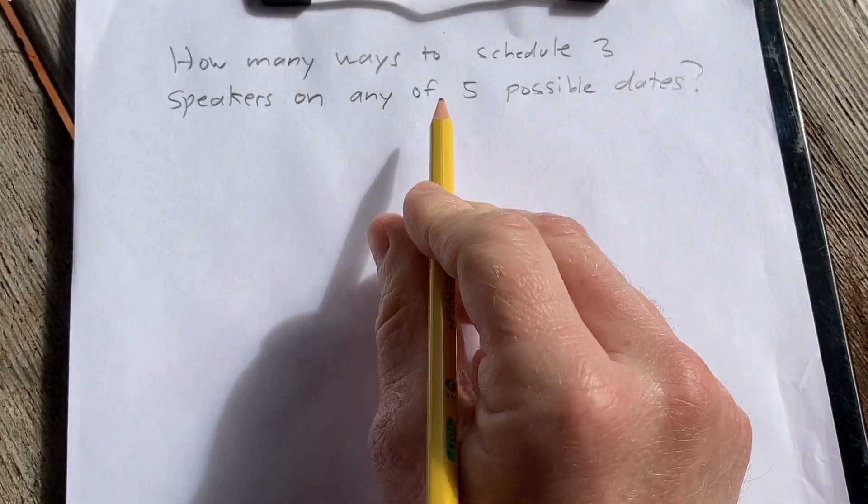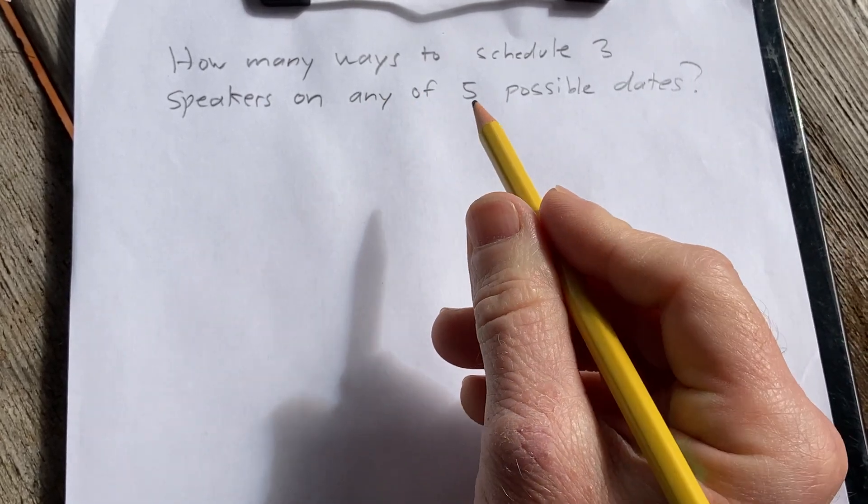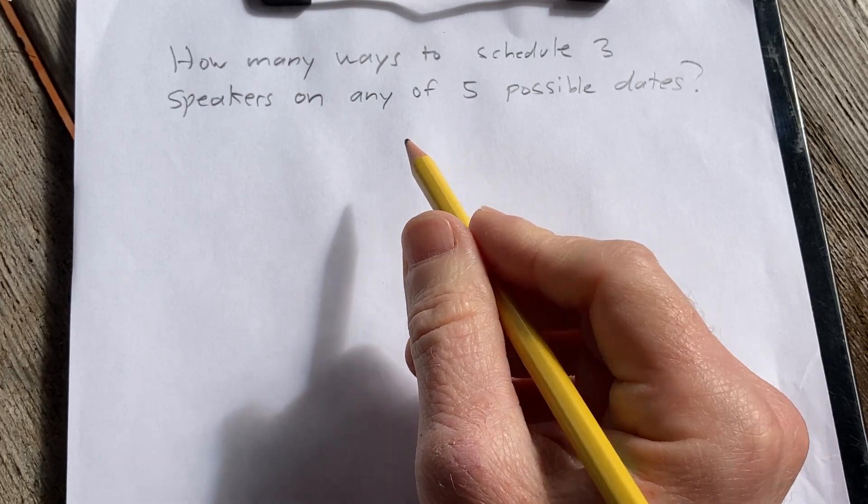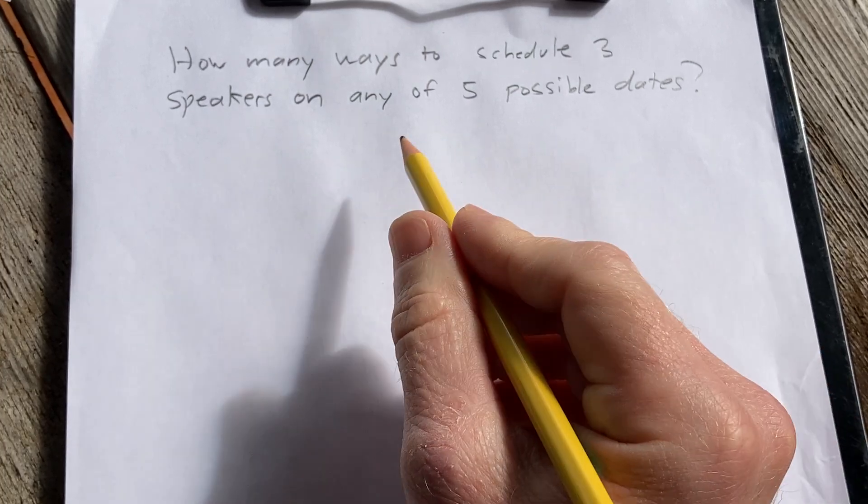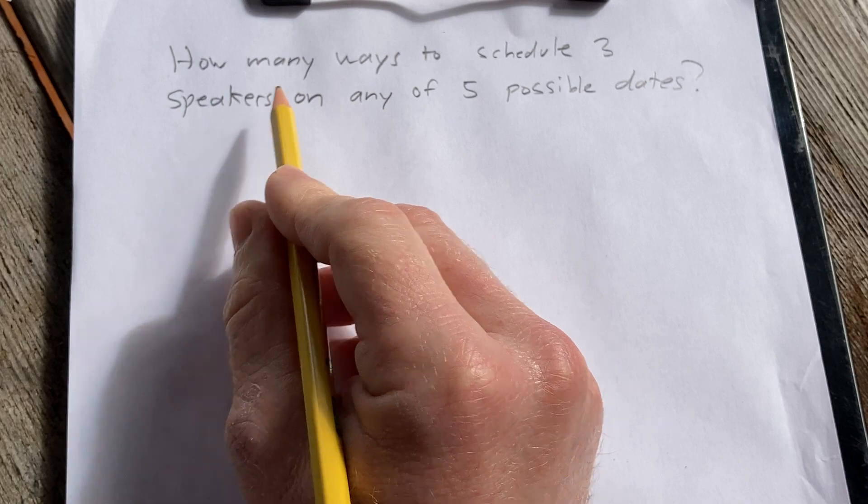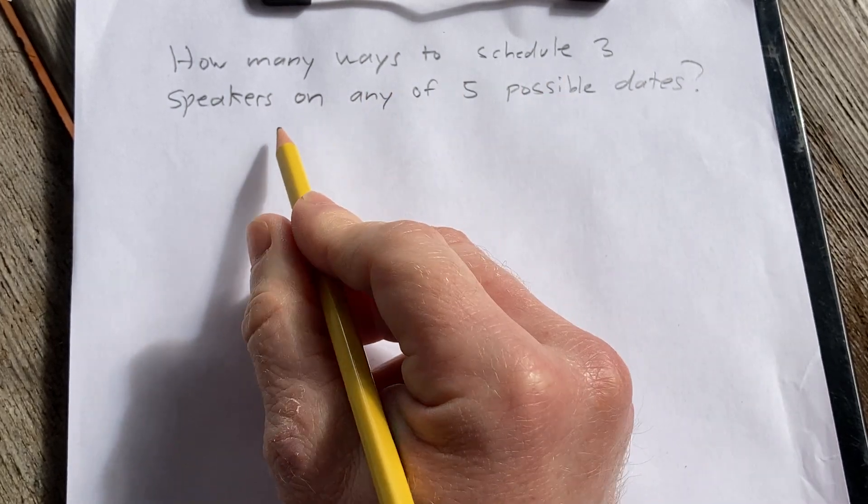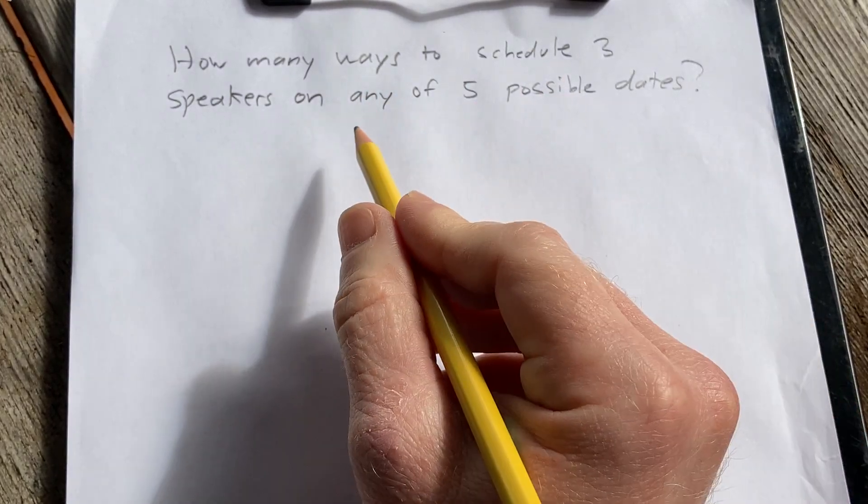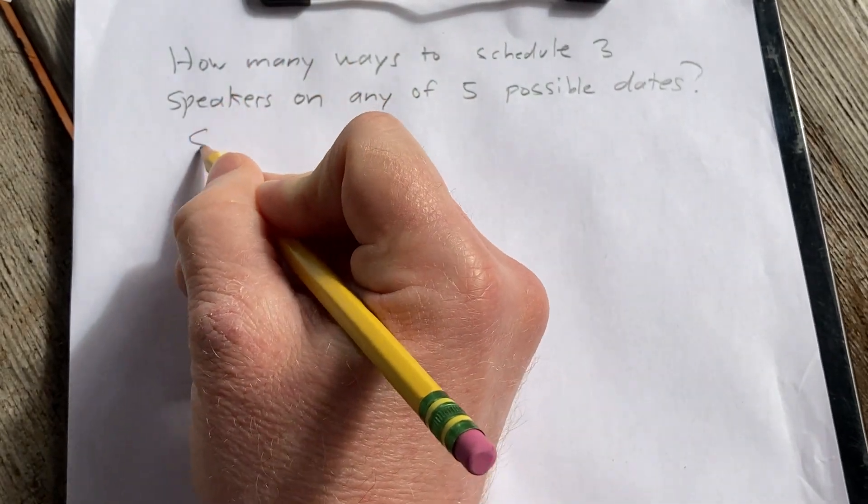Hi, in this video we're going to do a counting problem. Let's go ahead and read the question carefully and then we'll work through it, and we're going to do it two different ways. How many ways to schedule three speakers on any of five possible dates? So let's go ahead and work it out.